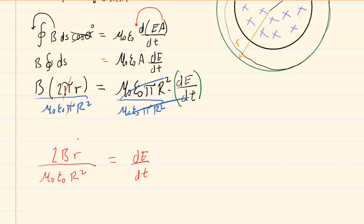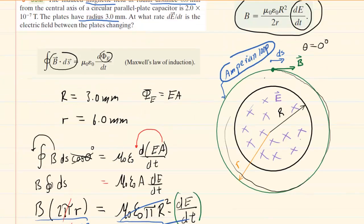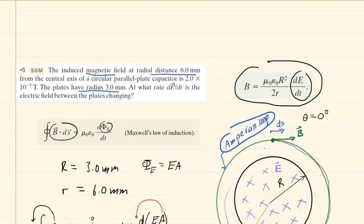We just have to plug in all the known values. We need the magnetic field, the radius of our Amperian loop, the radius of the circular plates, and then these two values are just constants. If we sneak a peek back here, the magnetic field strength is two times 10 to the minus seventh tesla. We've already labeled this as lowercase r, and then the radius of the plates is uppercase R.